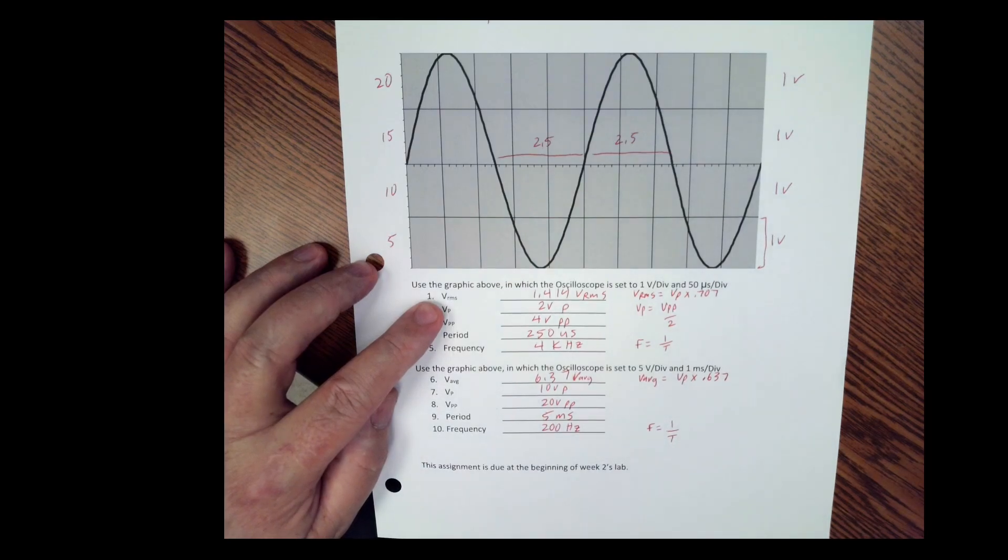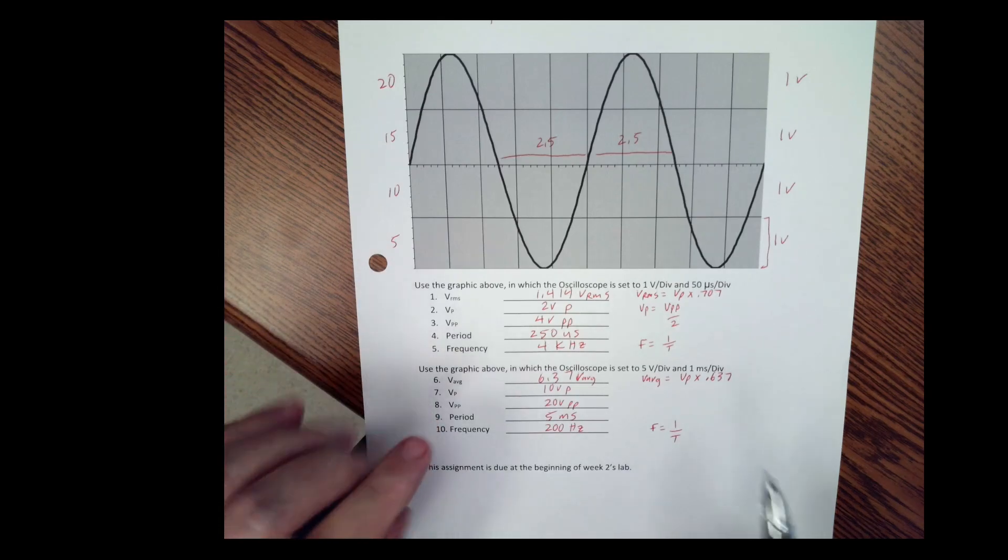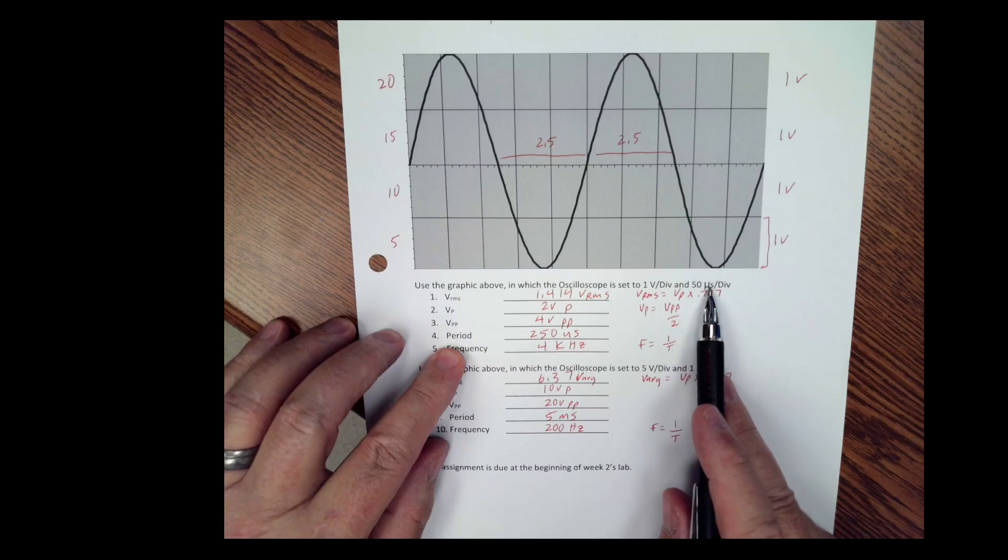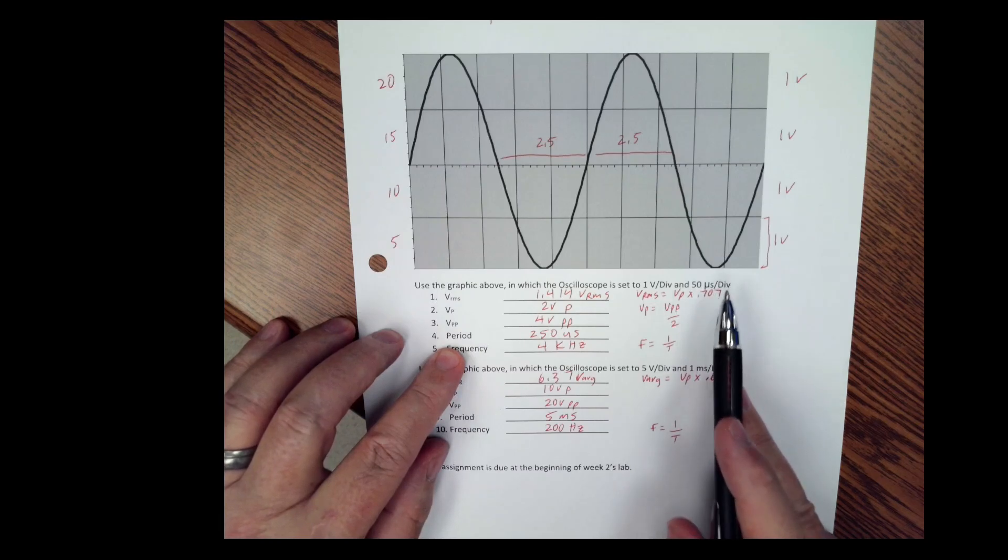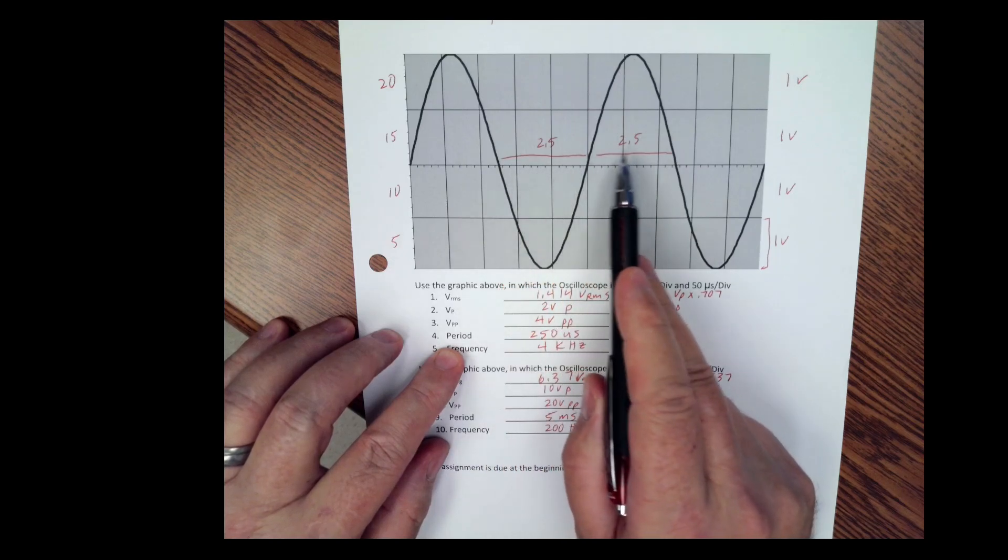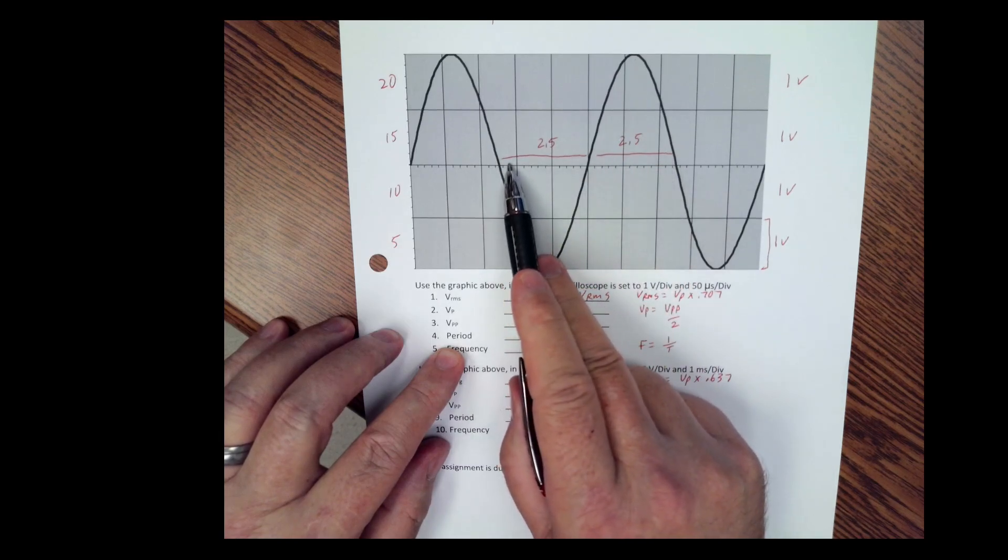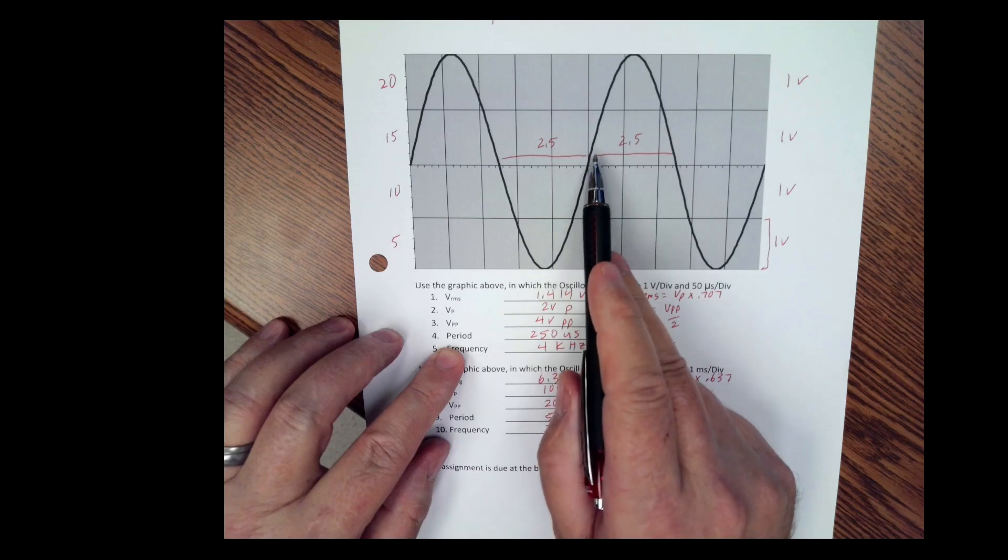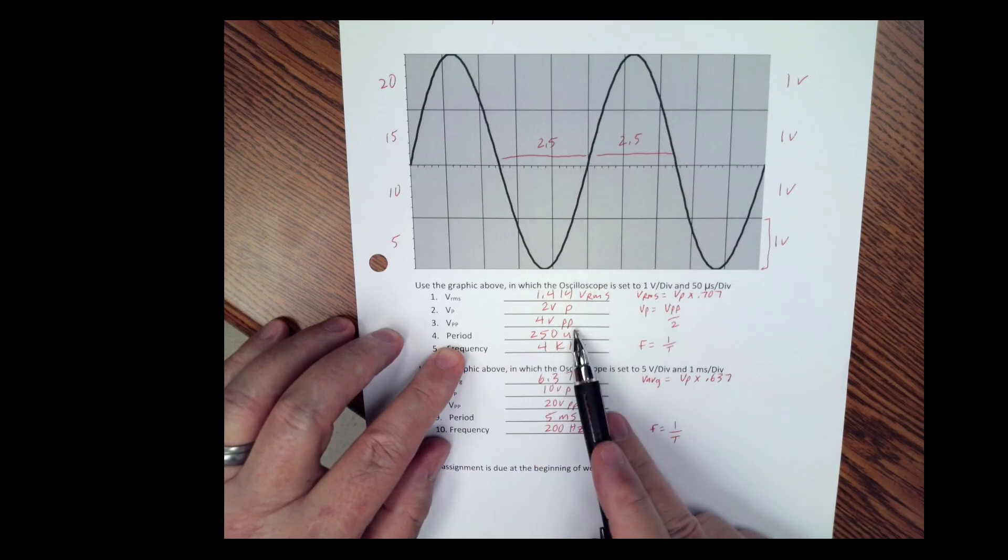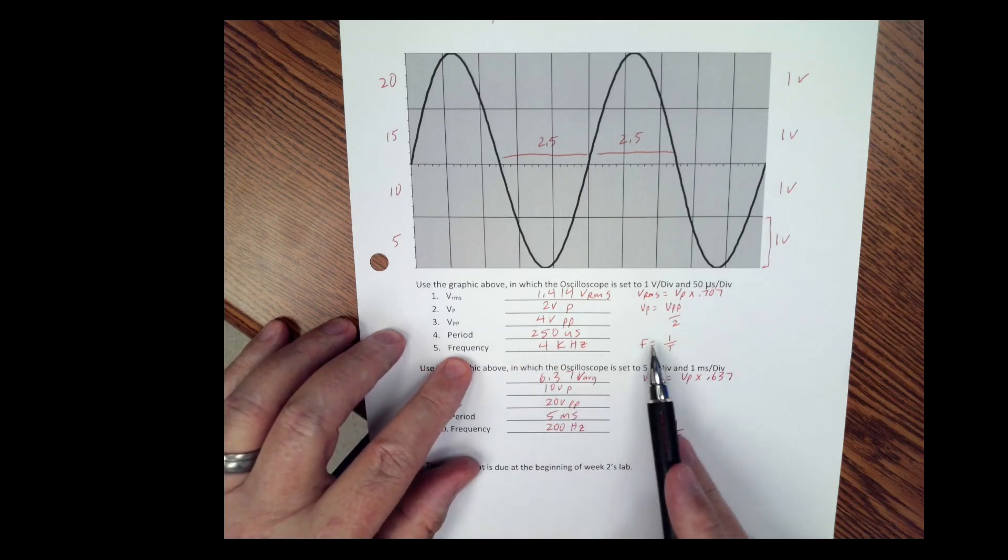And then the period - it says it's at 50 microseconds per division. And if you look here, we have one, two, three, four, and then we have half a division here, half a division there. So we have a total of five divisions. So five times 50 microseconds is 250 microseconds.